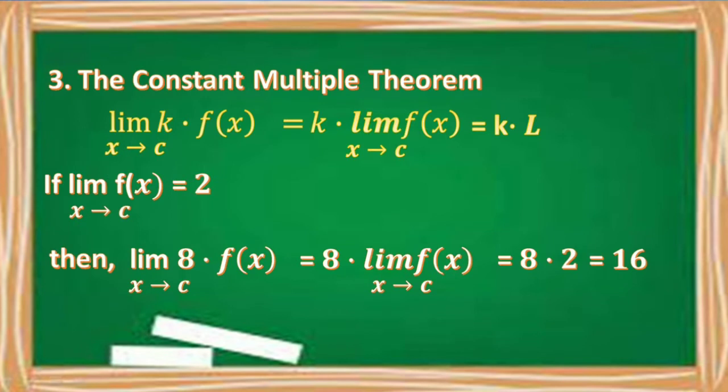Number 3: The Constant Multiple Theorem. It states that the limit of k times f of x as x approaches c is equal to k times the limit of f of x as x approaches c.